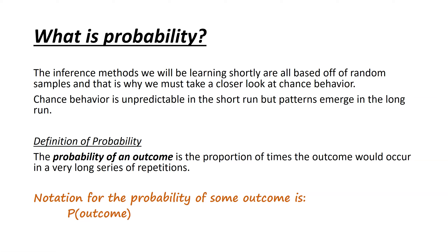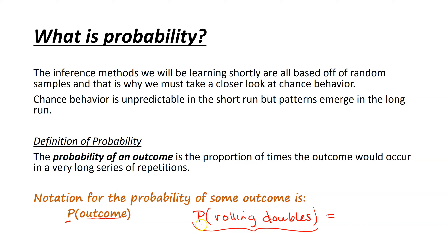Some notation we need to get comfortable with right away is probability notation. The probability of an event is written as a capital P followed by parentheses containing the outcome. For example, I might write the probability of rolling doubles, and that would equal some value we'll find in a bit. This whole piece would be read as 'the probability of rolling doubles.' Just getting comfortable with the notation.